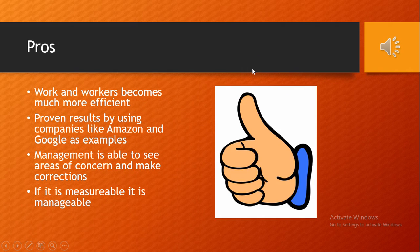With this modern digital Taylorism, there are pros and cons. Some of the pros are that workers are much more efficient due to a competitive workplace and strong pay. It's also proven that these companies get results — Amazon and Google are extremely successful and known as some of the best places to work. Another big pro is that management can identify areas of concern and make corrections much more quickly. The idea is that if something is measurable, it can be managed.